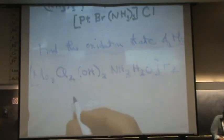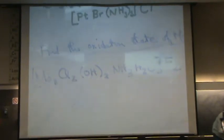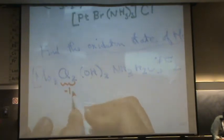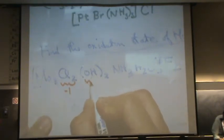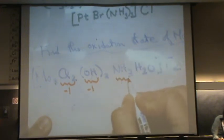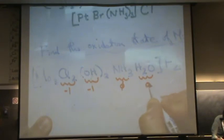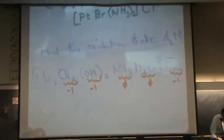Let's get the charge on all these. Molybdenum is the only one we don't know. Cl — there's two chlorine ligands — each one has a minus one. Each one of the hydroxys has a minus one. Ammonia is zero and water is zero. F, even though it's a counter ion, still has a charge and it's minus one.